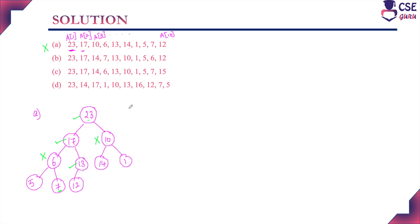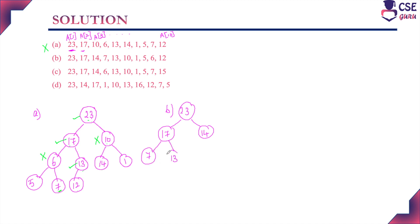Next, we check option B. The root node is 23, left child is 17, right child is 14. The next level has 7 and 13 as children of 17, and 10 and 1 as children of 14. The last level has 5, 6, and 12 placed accordingly. We have now constructed the binary tree for option B.